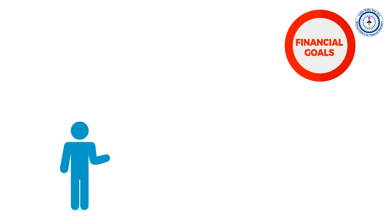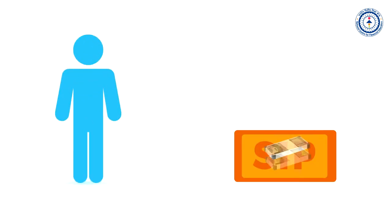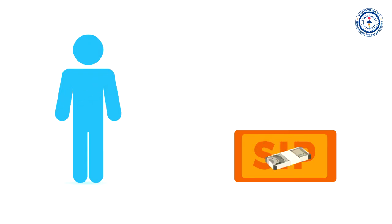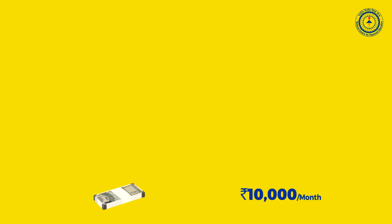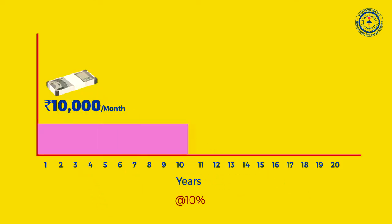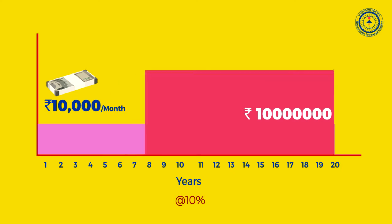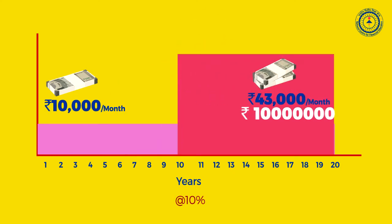SIP helps you achieve your financial goals through the power of compounding. For this, one must start investing early and remain invested for the long term. For example, if you invest 10,000 rupees per month for 20 years, you would have made almost a crore at 10%. Every 5 years that you delay investing, the amount to be invested to reach the same goal doubles.